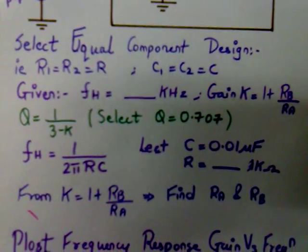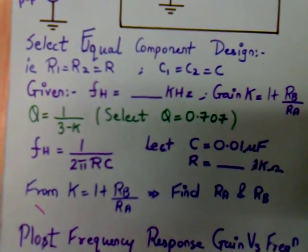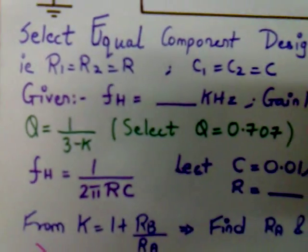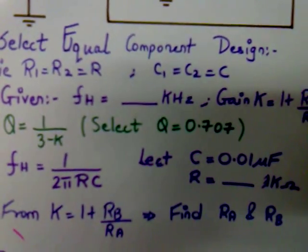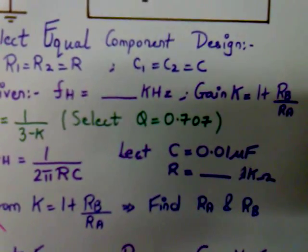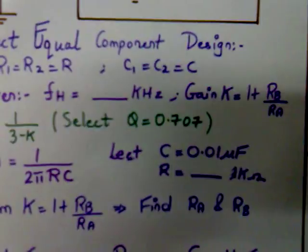If the gain of the circuitry is not given, we calculate the gain from this formula. Q is equal to 1 upon 3 minus K, where we select Q as 0.707 for Butterworth response.